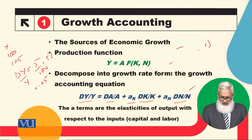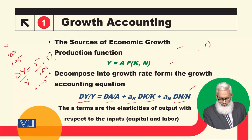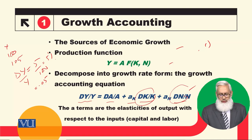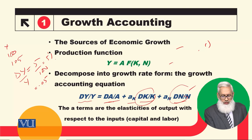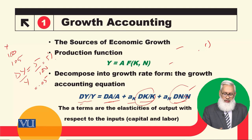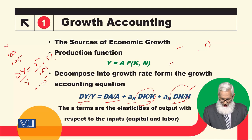Let me show it again. If the growth rate of capital and labor is 0, then the growth rate of technology will be equal to the growth rate of output. So if technology increases by 10%, output will also increase by 10%.